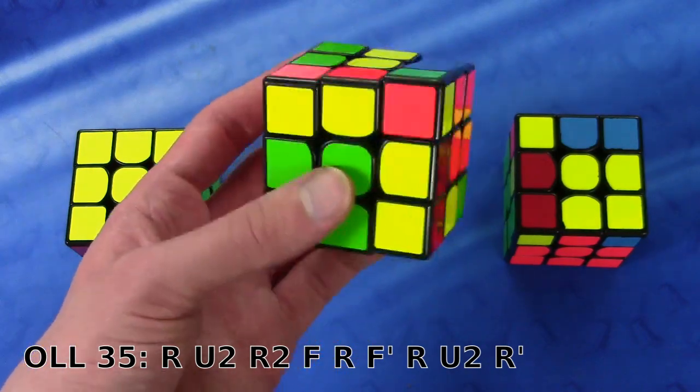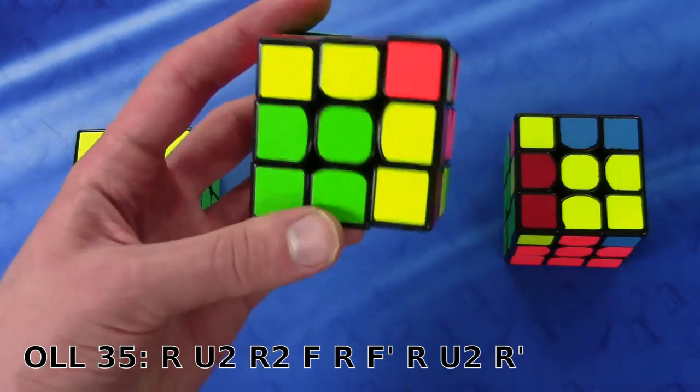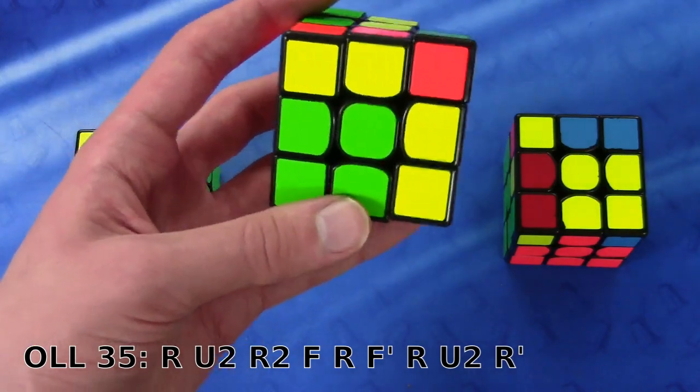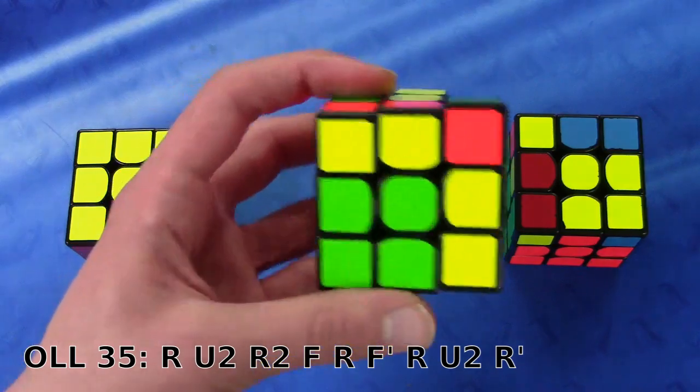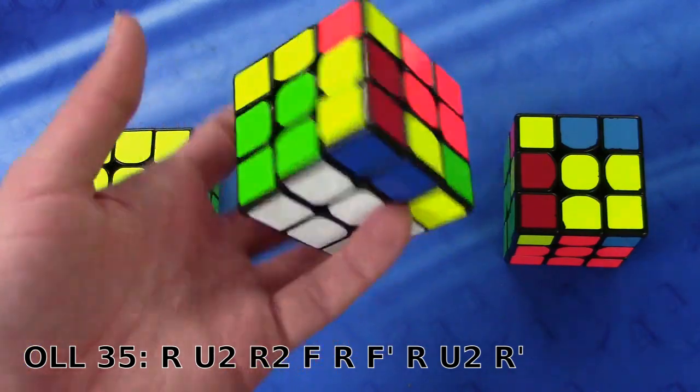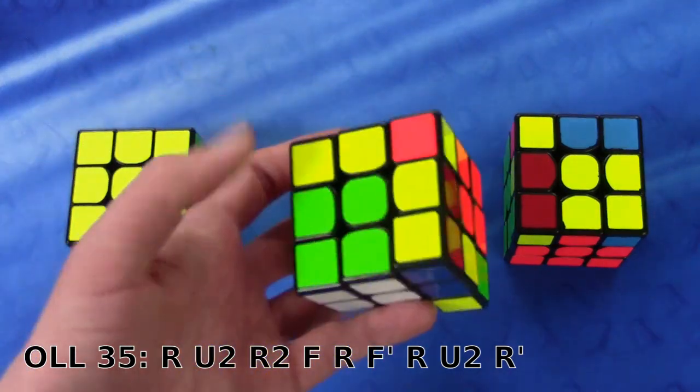Especially since the next move is an F, and doing an R2 as a double flick would probably destabilize my hand too much. So I have to make sure to hold the back of the cube with the rest of my hand.